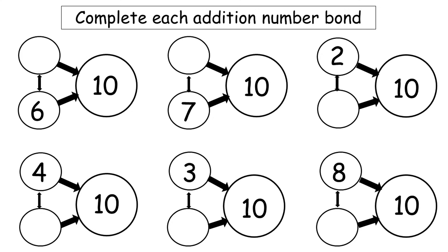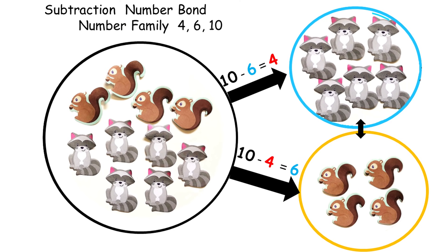Now have kids fill out the addition number bond. Next, I introduce the subtraction number bond to kids. The number family is 4, 6, and 10. The large circle is now on the left side with the largest number, 10, and the two smaller circles are on the right side because we are taking away. In this first equation, 10 minus 6 equals 4. And the reverse: 10 minus 4 equals 6.